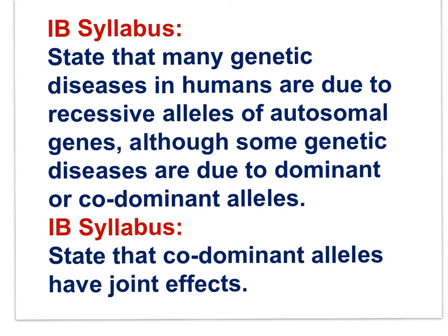With these two IB syllabus statements relevant to codominance, let's shift to the genetics of known diseases. Many genetic diseases in humans are due to recessive alleles of autosomal genes, although some are due to dominant or codominant alleles. Codominant alleles have joint effects.